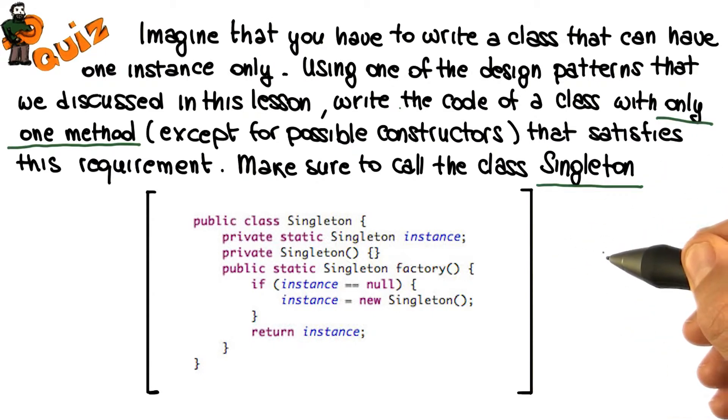Then we define the default constructor, the constructor that doesn't take any parameter, as private. In this way, other classes cannot create instances of singleton without calling our factory method.